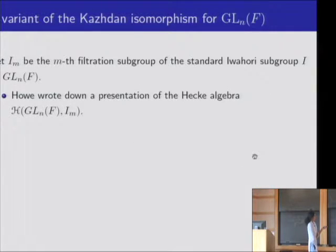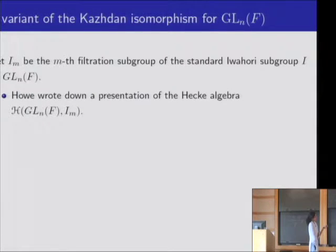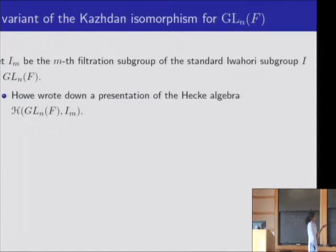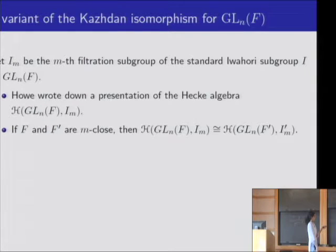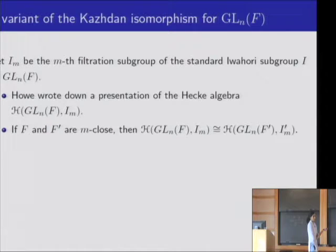For GL_N, there is a variant of the Kazhdan isomorphism due to Hov. Instead of working with the usual congruence subgroups, we work with the Iwahori congruence subgroups. I is the standard Iwahori subgroup of GL_N and I_M is the M-th filtration subgroup. Hov considered the Hecke algebra H(GL_N(F), I_M) and wrote down an explicit presentation — a complete list of generators and relations. By inspection of the generators, if the fields F and F prime are M-close, then these two Hecke algebras become isomorphic, giving a variant of the Kazhdan isomorphism for GL_N.